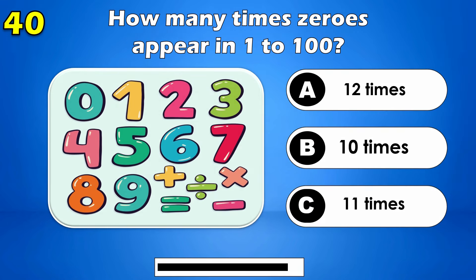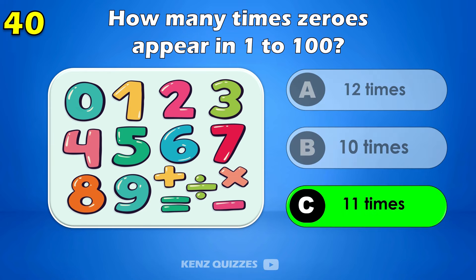How many times does zero appear in 1 to 100? The answer is eleven times.